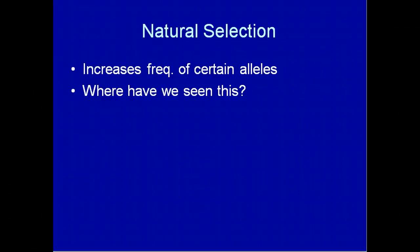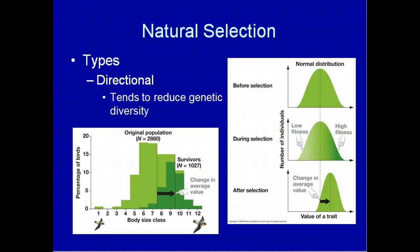There are basically three different types of natural selection that can cause changes in a population and therefore cause a population to be out of Hardy-Weinberg equilibrium. One of those types is directional selection. In directional selection, if it continues over time, it will change the allele frequencies in one direction or another in a population.